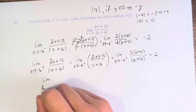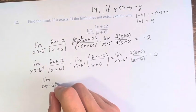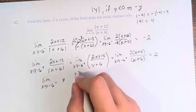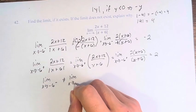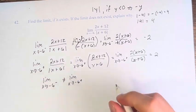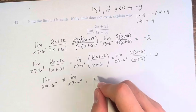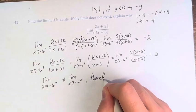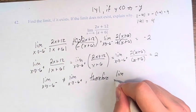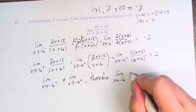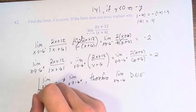Therefore, the limit as x approaches negative 6 from the left did not equal the limit as x approaches negative 6 from the right, right? Because negative 2 does not equal 2. Therefore, the limit as x approaches negative 6 does not exist.